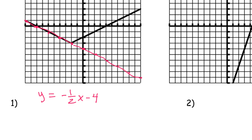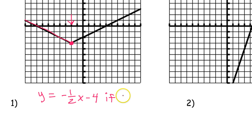Now because this is a piecewise function, we don't have the entire line y equals negative 1 half x minus 4 — we just have this portion of it. Notice it stops right here. What x value is this? Here's the x value where it changes from being the left branch and then becomes the right branch as it bends upward. This is an x value of negative 2. So for my piecewise function, this equation applies if x is less than or equal to negative 2.